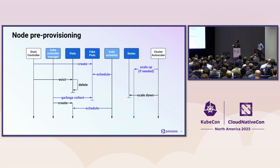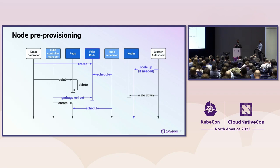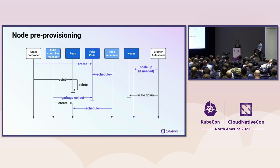After the fake pods are scheduled, the cluster autoscaler will scale up if needed. Once we see that all fake pods are scheduled, we delete them, start evicting the real pods, and they'll be scheduled more or less right away. The state of pending pods is relatively dynamic — there could be other scale-ups or node drains happening concurrently — but if we do this for multiple concurrent node drains, we get the sum of resources required and can schedule all replacement pods across those drains simultaneously.